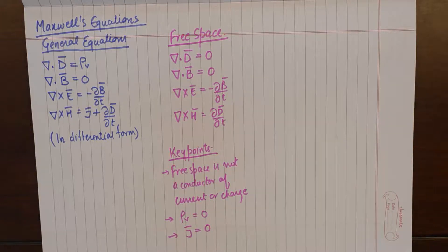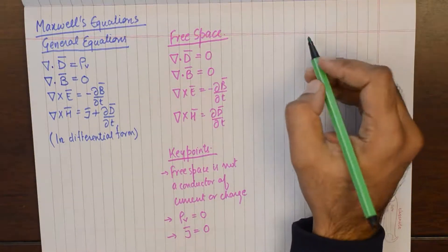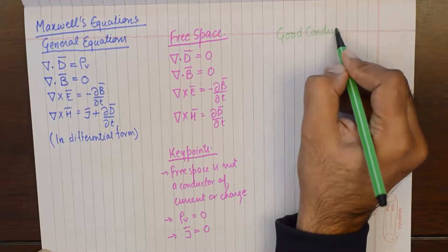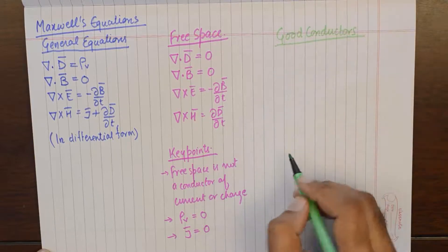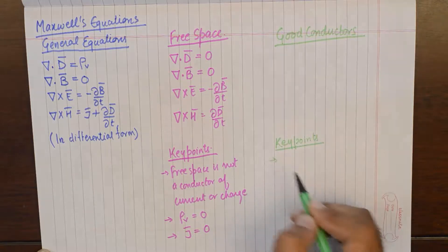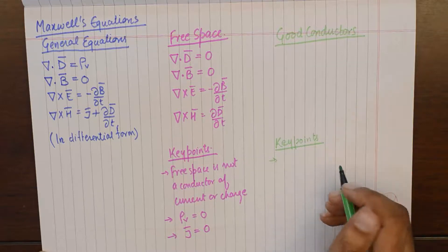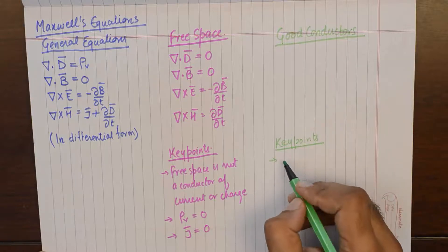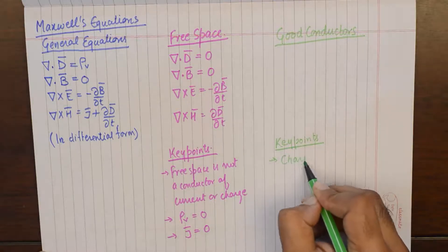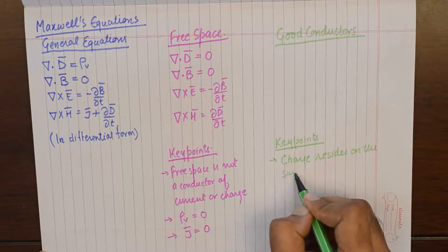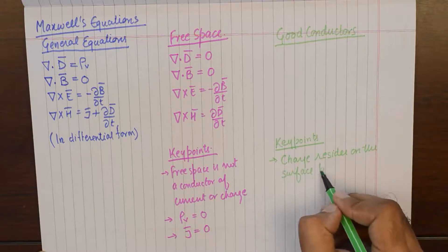We come to case number two. What happens to Maxwell's equations when they are subjected to good conductors? The key points for good conductors are: the first key point is that in good conductors charge resides on the surface because of the skin effect.